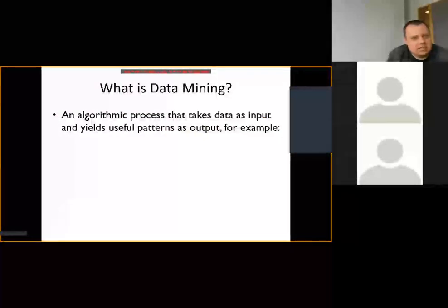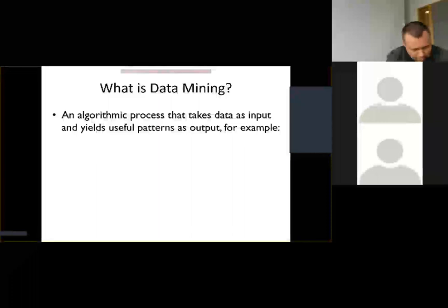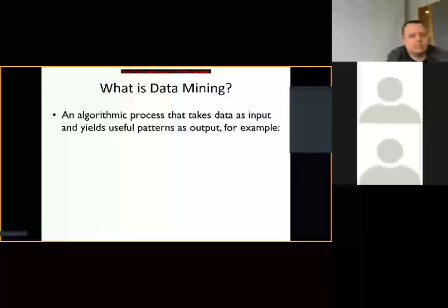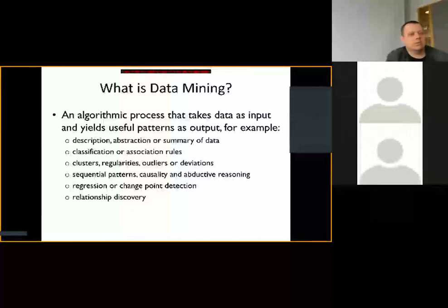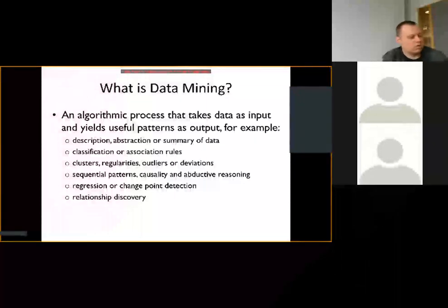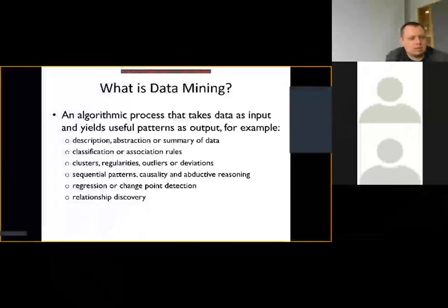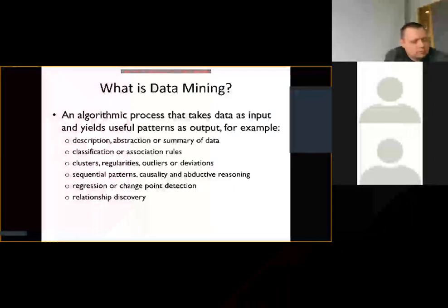Data mining can be formalized as an algorithmic process: take data as input and produce patterns as output. The kinds of patterns we might look for include descriptions or abstractions of data, classification or association rules, clusters, outliers, deviations, sequential patterns, causality, abductive reasoning, regression, and change-point detection. Different patterns require different methods, but all of them can potentially be found from the same data. The key concept throughout is discovery — finding something new.